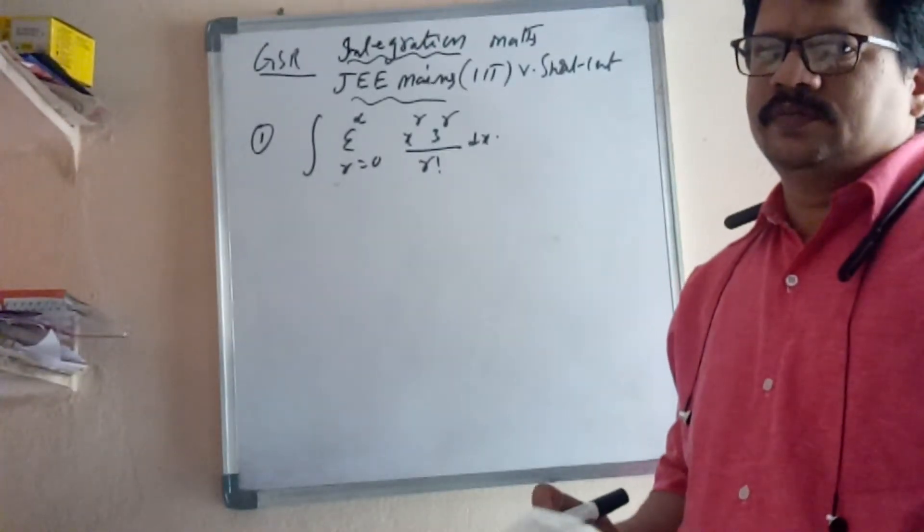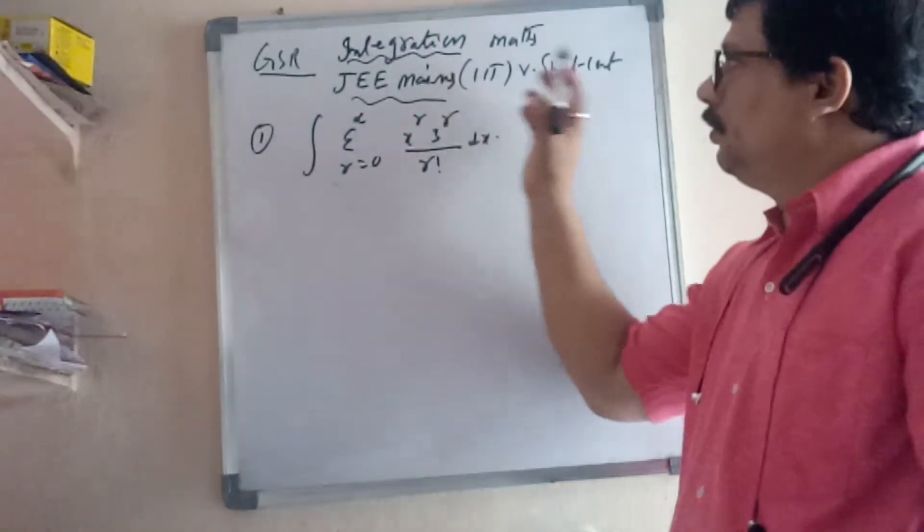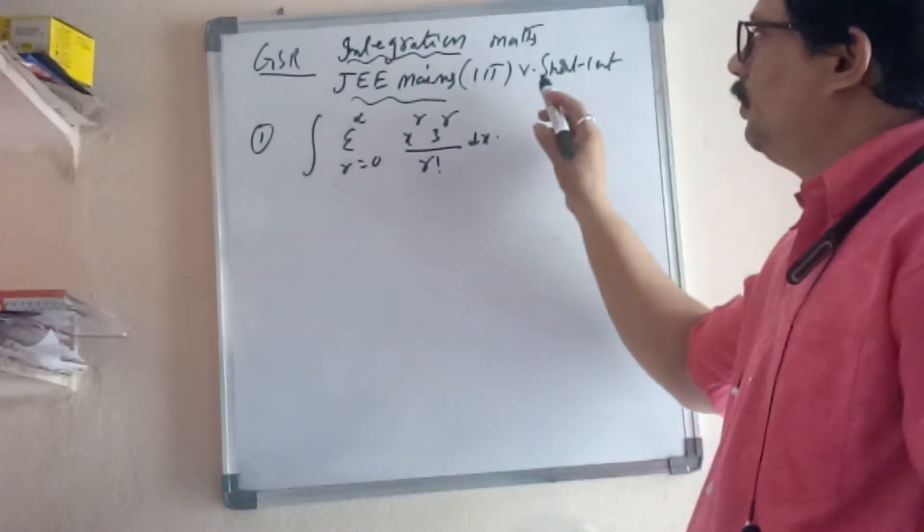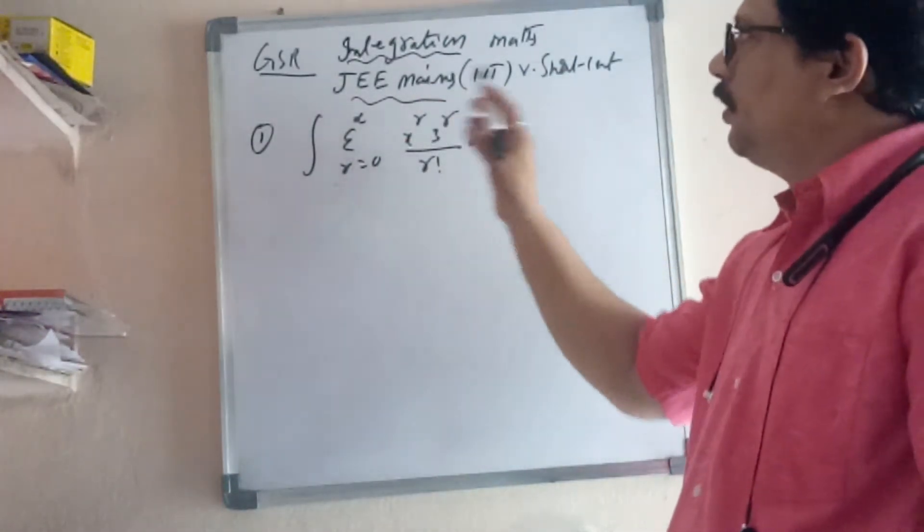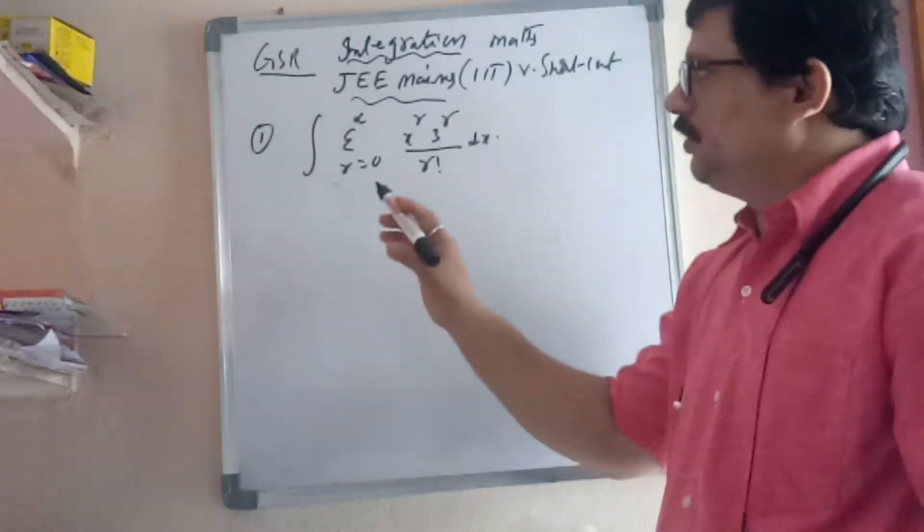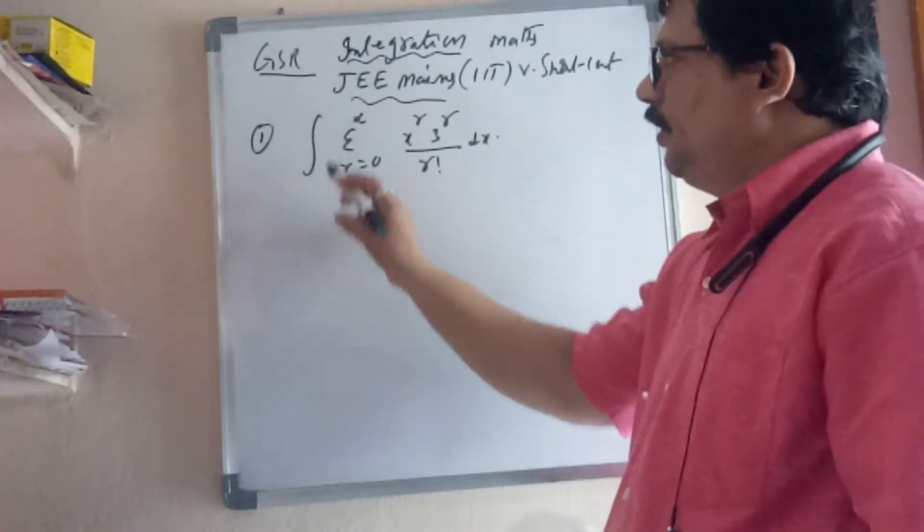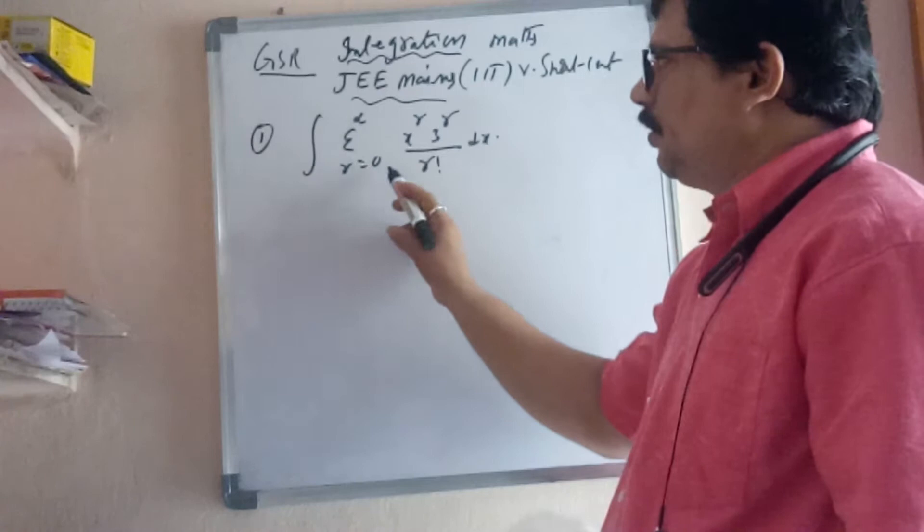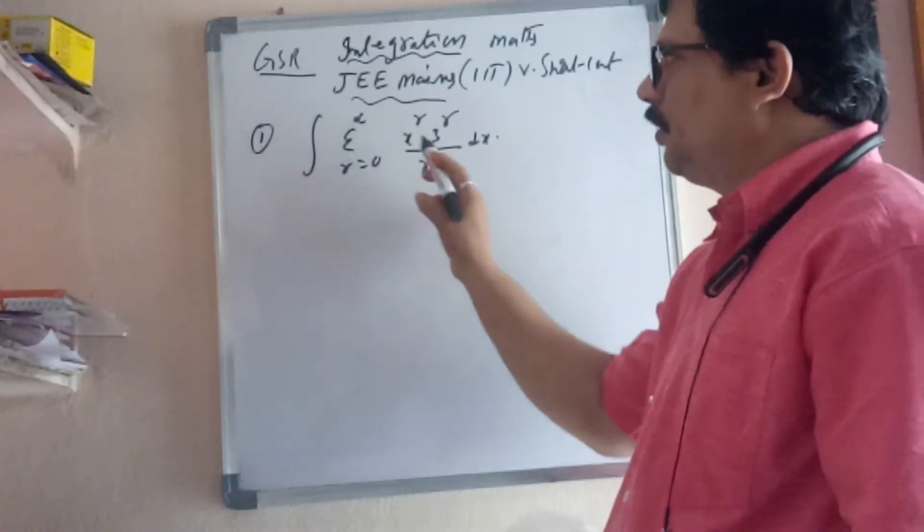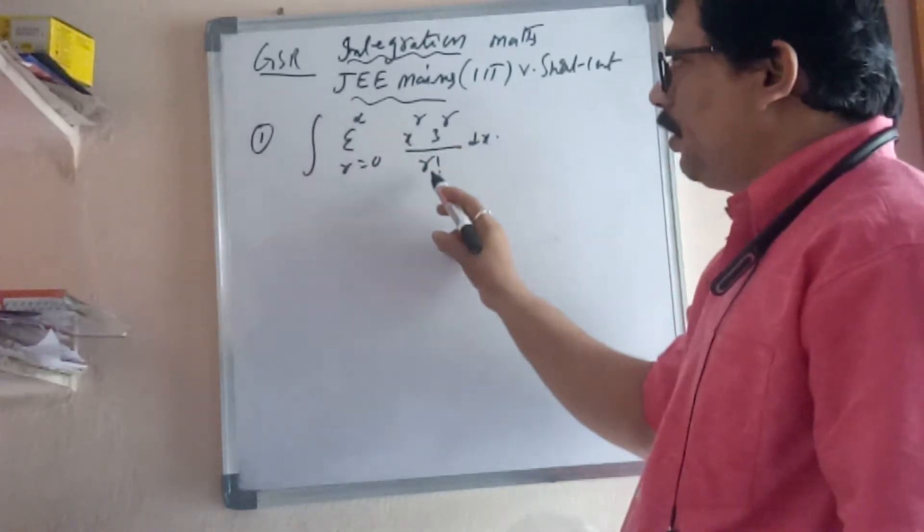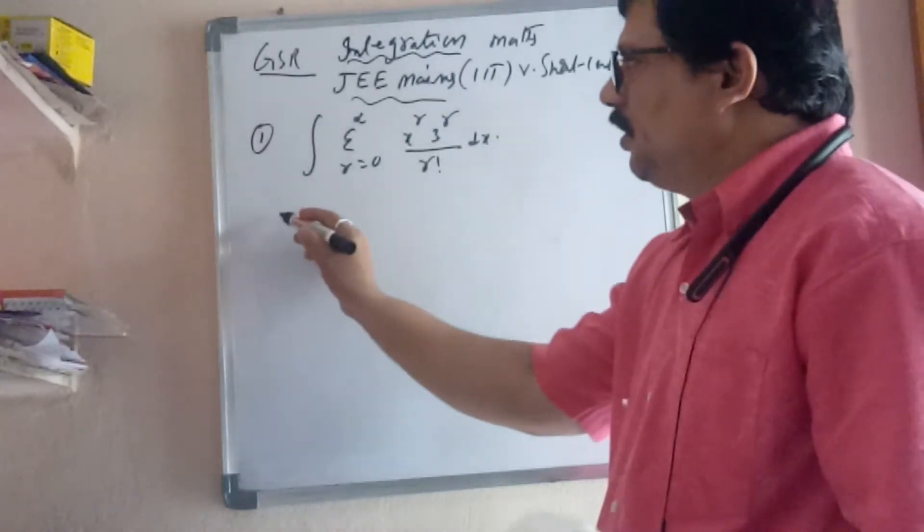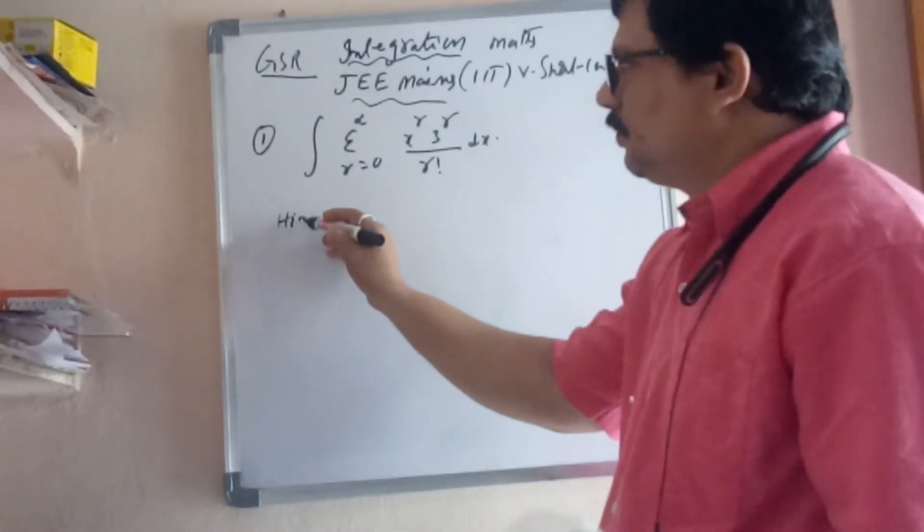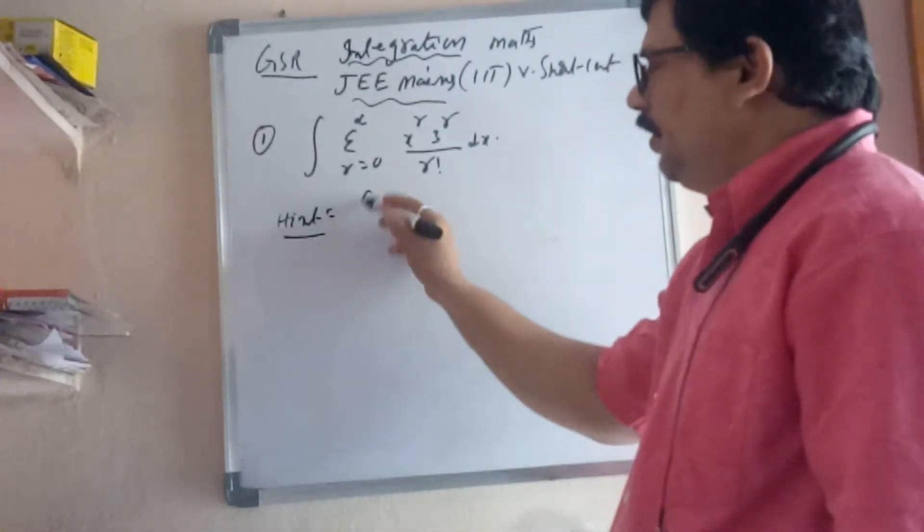Good morning students, welcome to YouTube channel Integration Part. I will tell you JEE mains shortcut. Listen carefully. First integral: Sigma r=0 to infinity, x^r / 3^r * r! dx. How to do the shortcut?